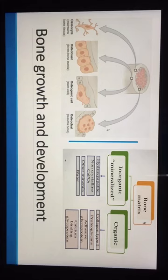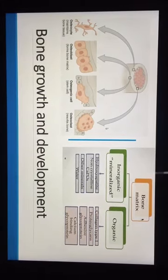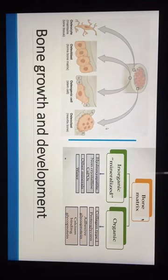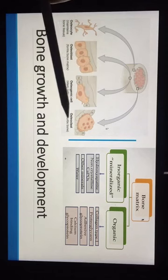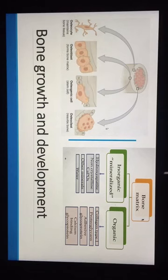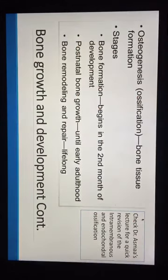First, bone growth and development. What we should know here are the cells of the bone tissue: osteocyte, osteoblast, osteogenic cells, and osteoclast. A helpful mnemonic — osteoblast B stands for building, and osteoclast C stands for crashing. The bone matrix has an organic and an inorganic part. The organic part contains collagen type one, while the inorganic part is mineralized and contains water and other minerals.